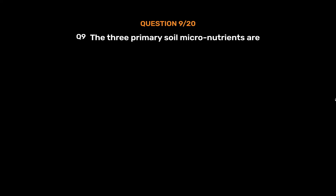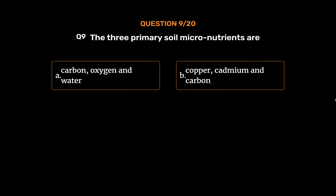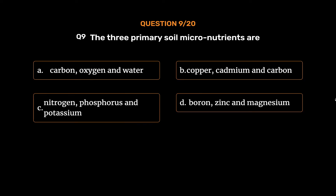Question No. 9: The three primary soil macronutrients are: Option A, Carbon, Oxygen and Water; Option B, Copper, Cadmium and Carbon; Option C, Nitrogen, Phosphorus and Potassium; Option D, Boron, Zinc and Magnesium. The correct answer is Option C, Nitrogen, Phosphorus and Potassium.